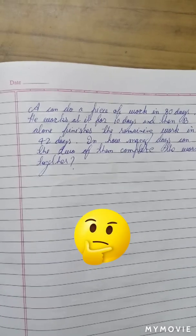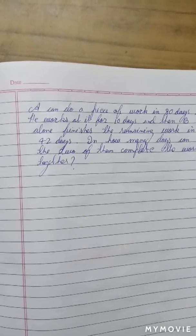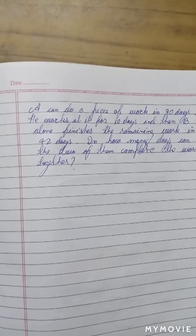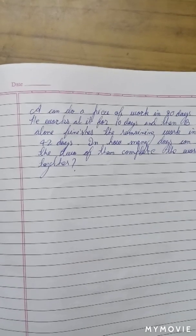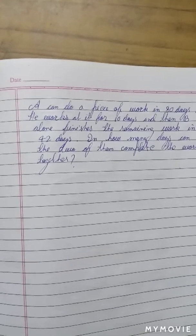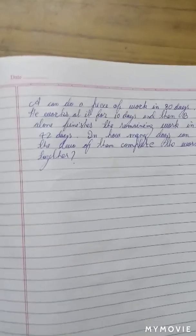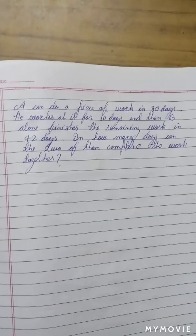E can do a piece of work in 80 days. He started working on that piece of work and after working 10 days, he left. Then B alone did the remaining work in 42 days. The question is, if they had worked together, how much time would it have taken? Let's find out.